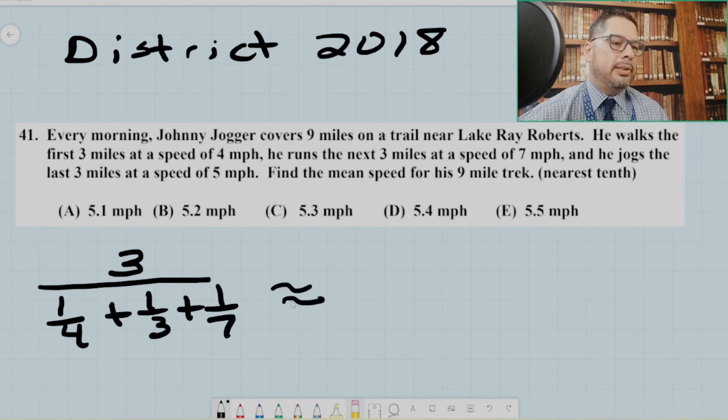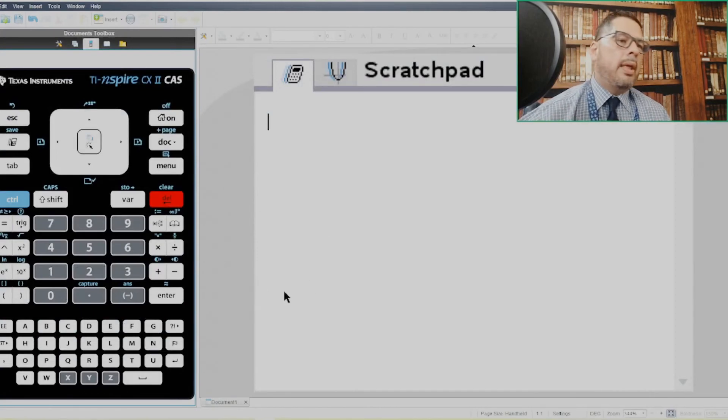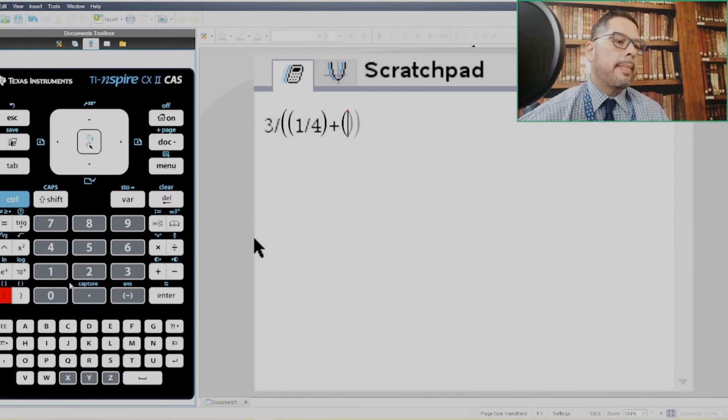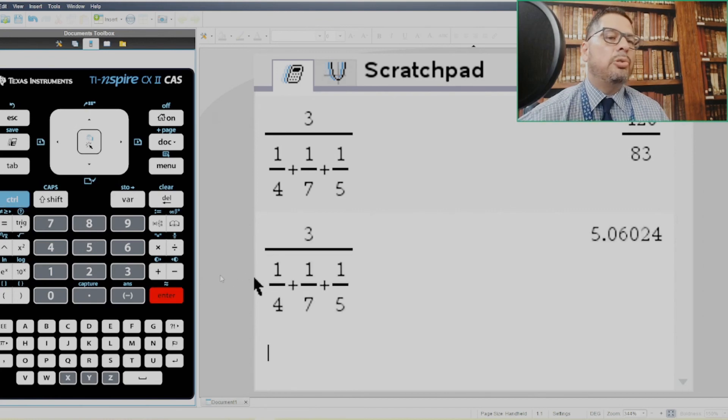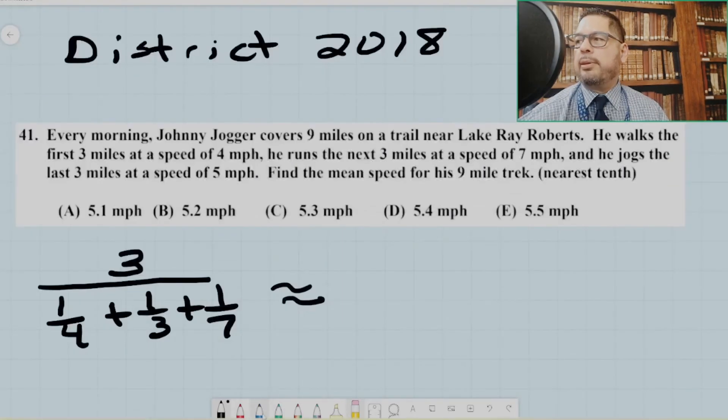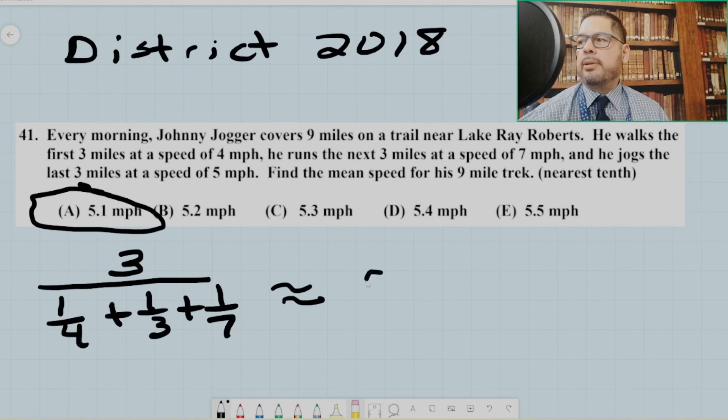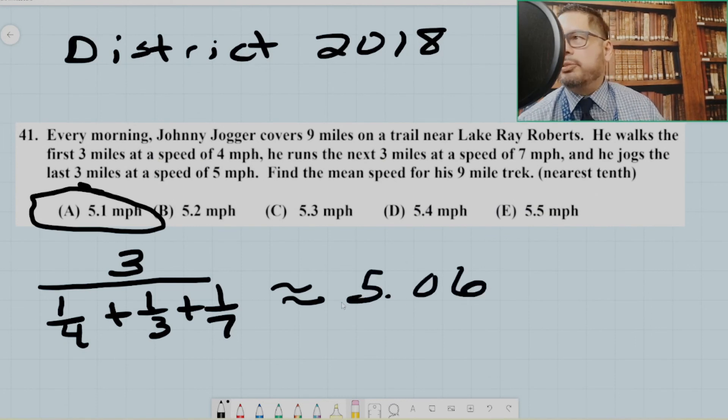So when you plug that into the calculator, let's go ahead and do that. And again, I don't know any shortcut for the harmonic mean button on the TI Inspire, so I just end up plugging it all in. Let's go ahead and hit the approximation button. 5.06 is your approximation. And so if we minimize our calculator, we get 5.06. So the answer is A, approximately 5.06. And so that does it.